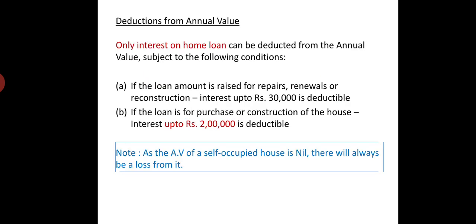The annual value is nil, and from that we need deductions. Only interest on home loan can be deducted from the annual value. In a self-occupied house, there is no standard deduction — only interest on home loan is allowed, and that is conditional.